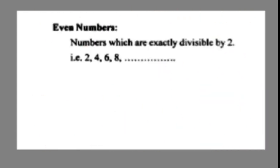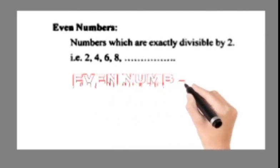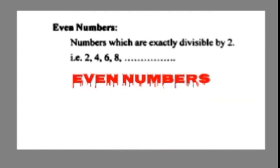Even Numbers are numbers which are exactly divisible by 2. If a number divided by 2 has a remainder of 0, those numbers are called even numbers.